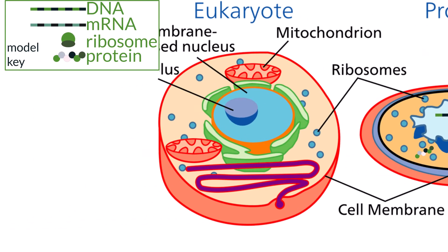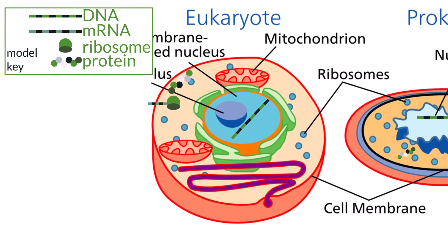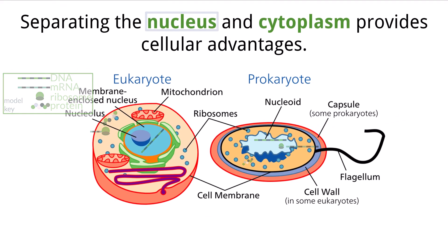Within a eukaryotic cell, the DNA sits inside of the nucleus, which does not allow the entry of ribosomes. In this case, the messenger RNA from transcription has to be moved out of the nucleus to be translated. This allows time for the messenger RNA sequence to be modified before it is translated, which is an advantage to make the proper proteins our cells need to function. Both transcription and translation are discussed in greater detail in the D1.2 videos.